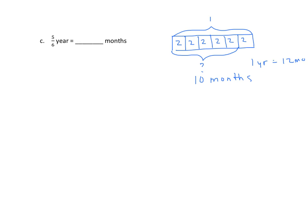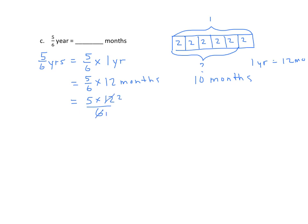Now let's look at it mathematically. We have five-sixths years, which equals five-sixths times one year. We convert one year to twelve months, so five-sixths times twelve months equals five times twelve over six. Both twelve and six are divisible by six — twelve divided by six is two — and we get ten months.